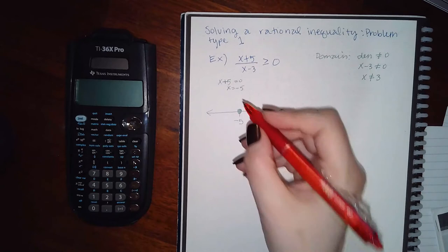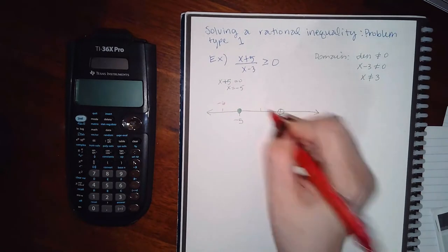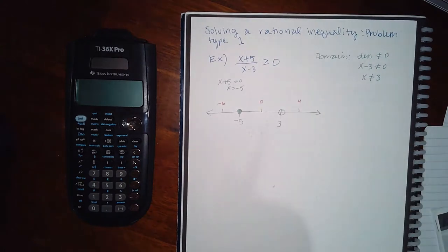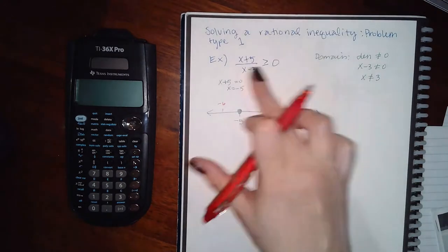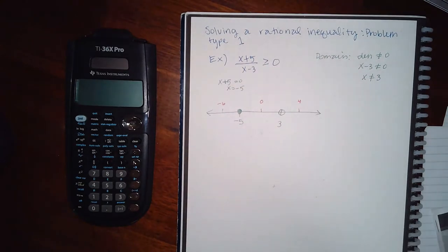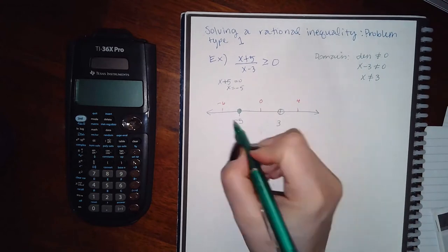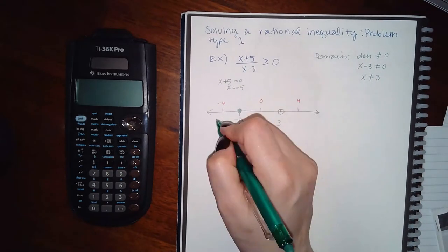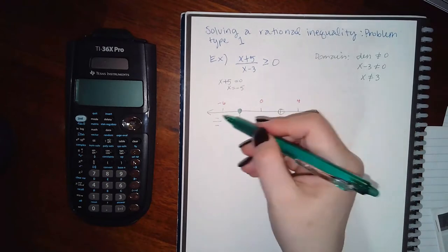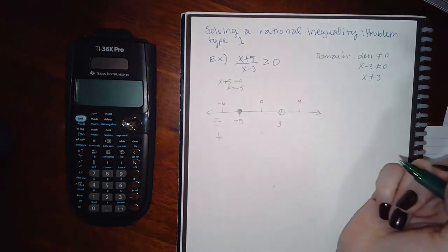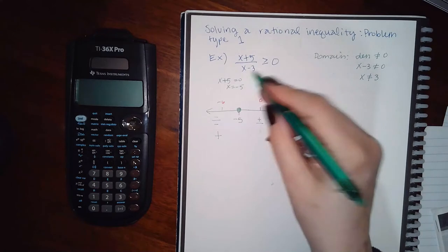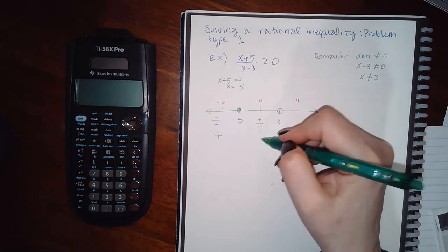I'll try negative 6, 0, and then 4. You do have to plug into the original fraction — you'll be dividing signs instead of multiplying. Plugging in negative 6: negative in the top, negative in the bottom — negative divided by negative is positive. Plugging in 0: positive in the top, negative in the bottom — positive divided by negative is negative.